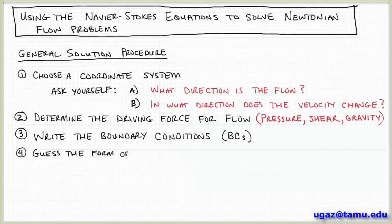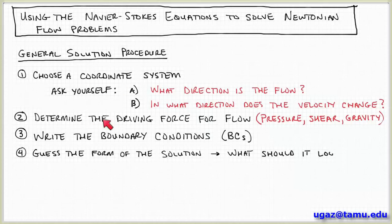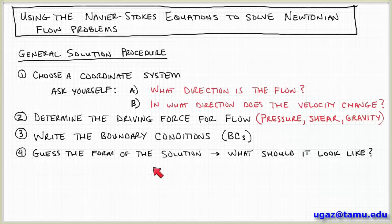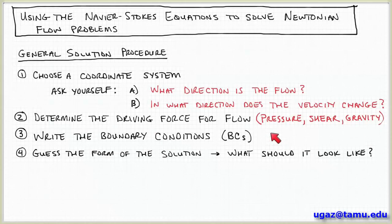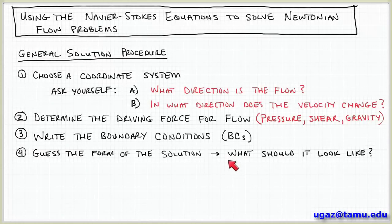Step four is to make a guess about what the solution should look like based on intuition from the previous three steps. For example, in flow between parallel plates, we expect the velocity to go from zero at the stationary plate to the boundary velocity at the moving plate. After working more problems, you build engineering intuition and can make an educated guess. That's important because it lets you check whether the solution you obtain is realistic.